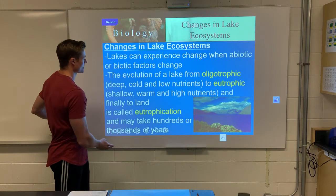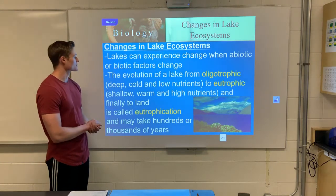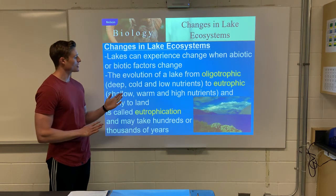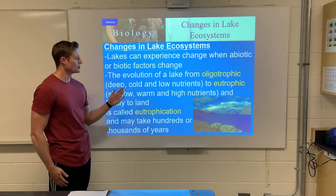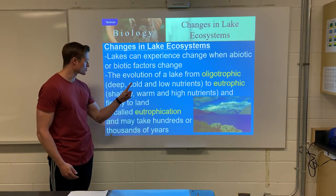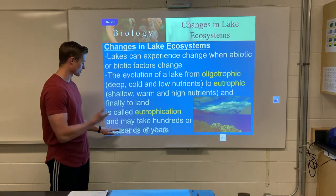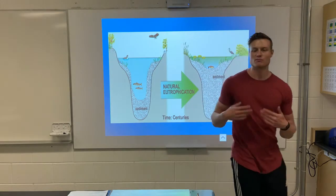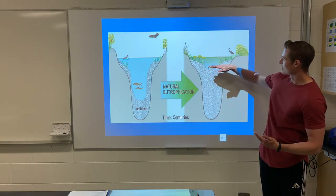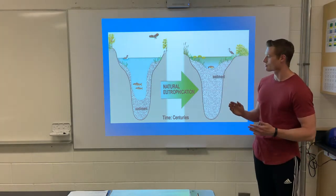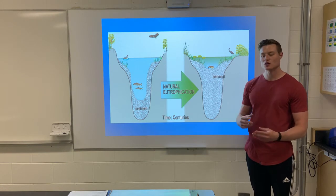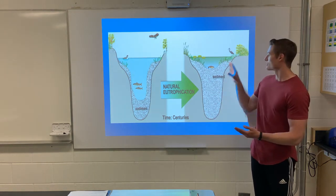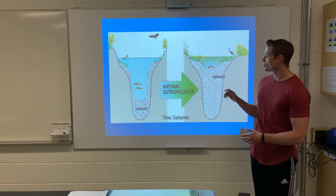So how can aquatic ecosystems change over time? Lakes generally evolve from an oligotrophic lake — deep, cold, full of oxygen but low in nutrients — to a eutrophic lake, which is shallow, warm, high in nutrients but low in dissolved oxygen. This process is called eutrophication. Over time, sediment builds up at the bottom, affecting depth. Nutrient levels change too — phosphorus or nitrogen runoff from fertilizers can speed up eutrophication, leading to algae blooms.